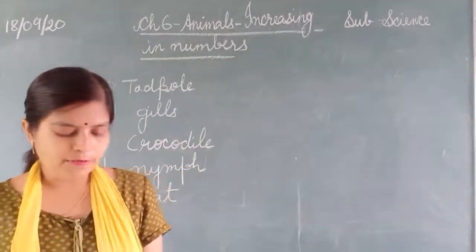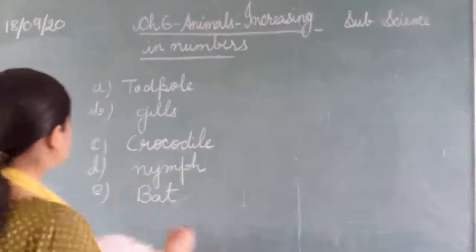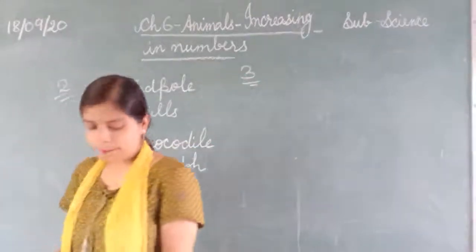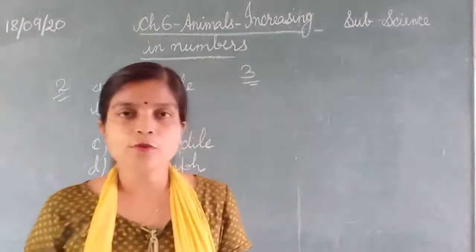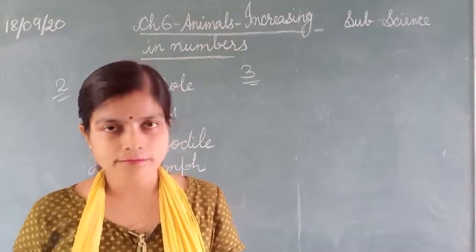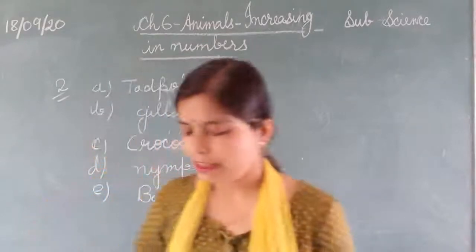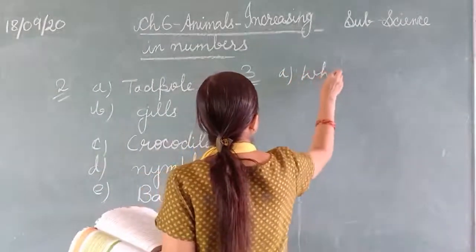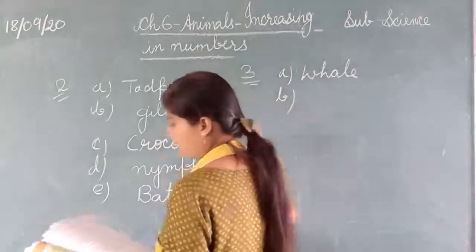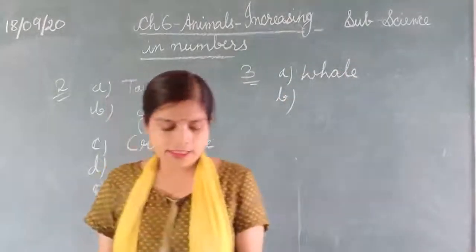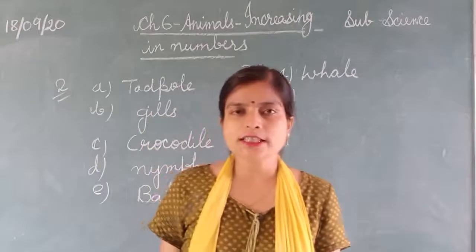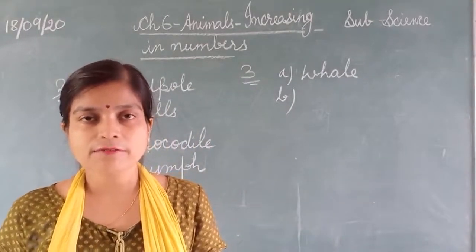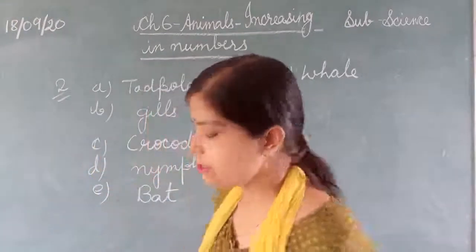Give one example of a mammal. Mammals that live in water — that would be dolphin or whale; you can write any one example. The insect with four stages in its life cycle is the butterfly. Butterfly has four stages, so write butterfly.